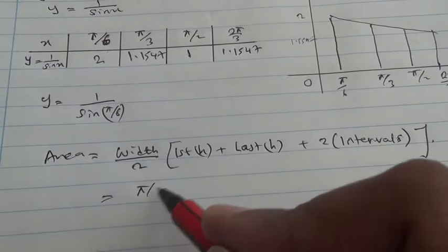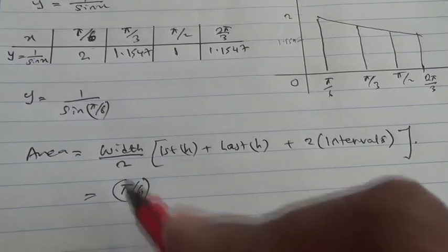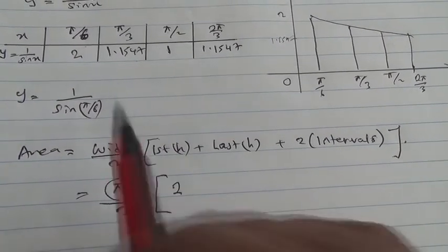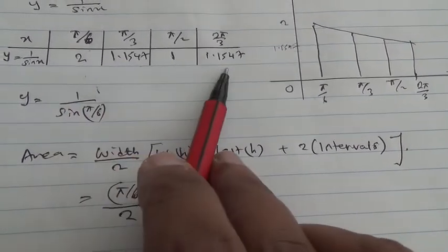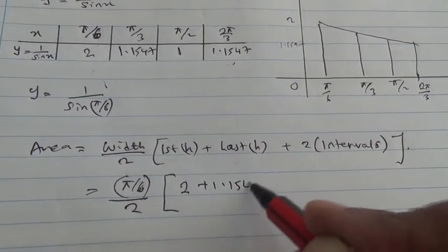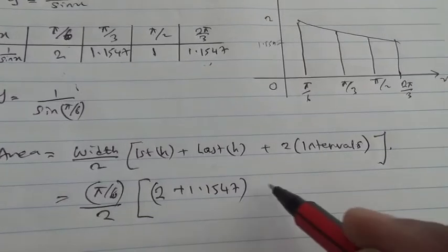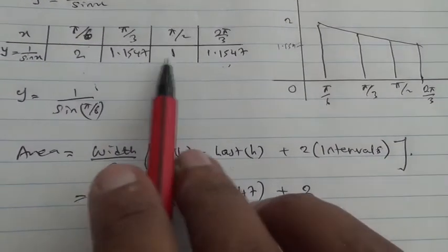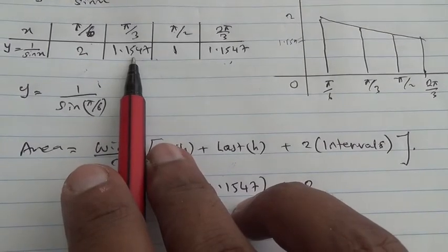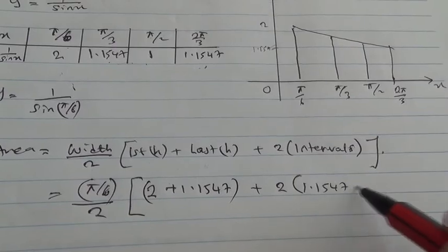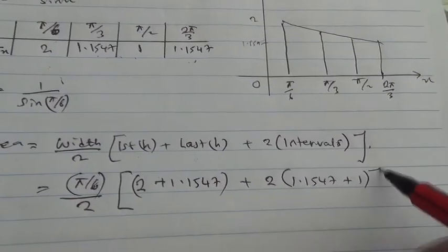Times the first height, the first height is two, and the last height is 1.1547 plus 1.1547, and 2 times the intervals, the intervals are 1.1547 and then 1, so 1.1547 plus 1, close the bracket.